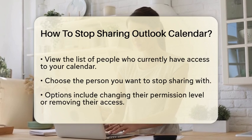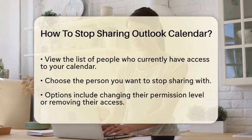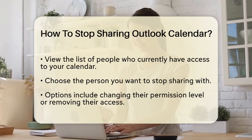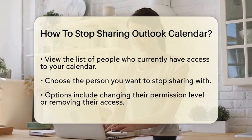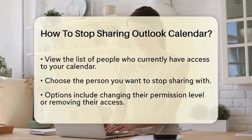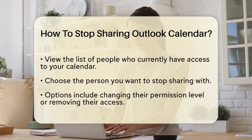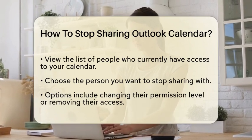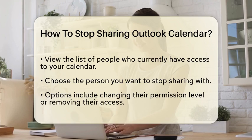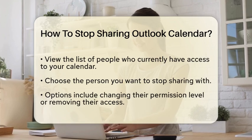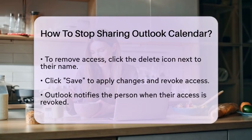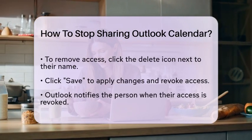You have two choices here. You can either change their permission level or completely remove their access. To remove their access, simply click on the delete icon next to their name. After you have made the necessary changes, do not forget to click Save. This action will apply your changes and remove the person's access to your calendar.